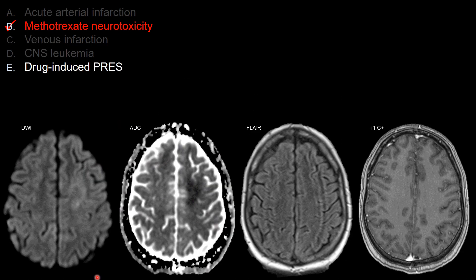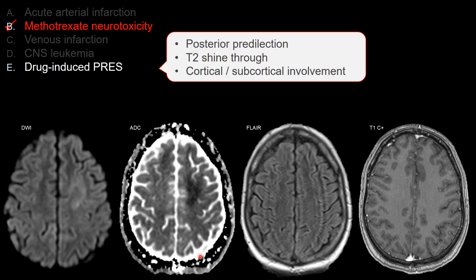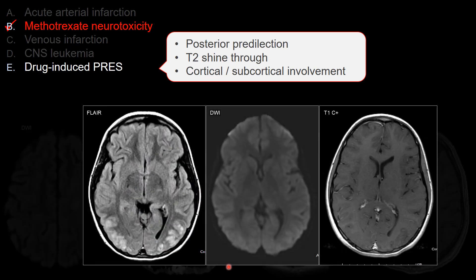For choice E, drug-induced PRES — posterior reversible encephalopathy syndrome — this typically occurs in patients with hypertensive emergency, hypertensive encephalopathy, eclampsia, or preeclampsia. One potential cause is patients undergoing chemotherapy or immunosuppressive medication. However, PRES is typically posteriorly predominant. On the board exam they show the classic case with posterior distribution. It should not have restricted diffusion; instead it has T2 shine-through. Also, PRES typically has cortical and subcortical involvement.